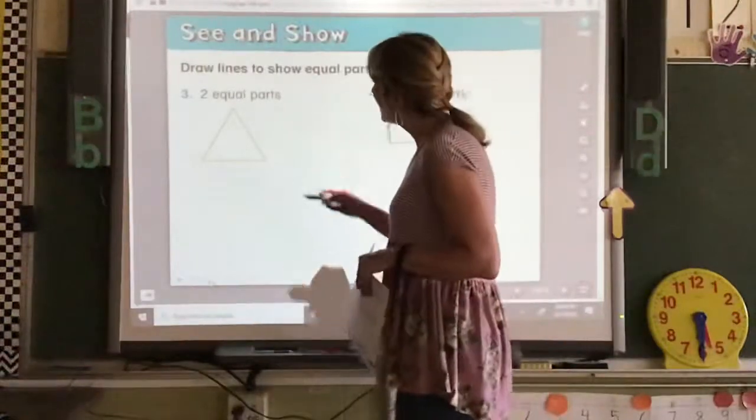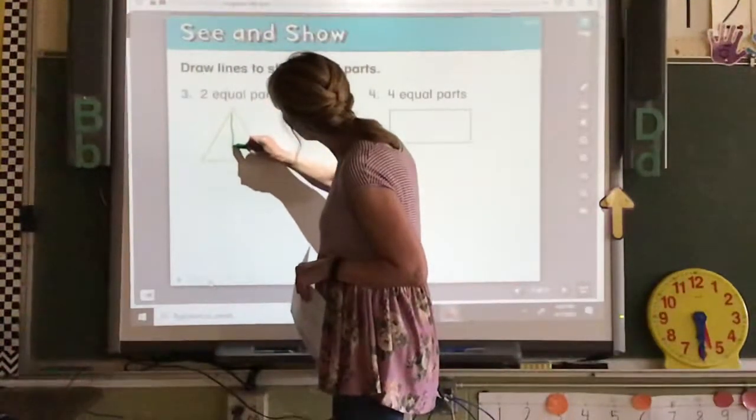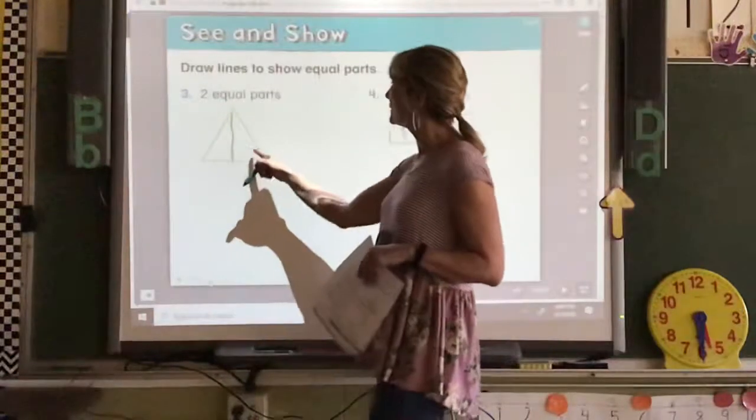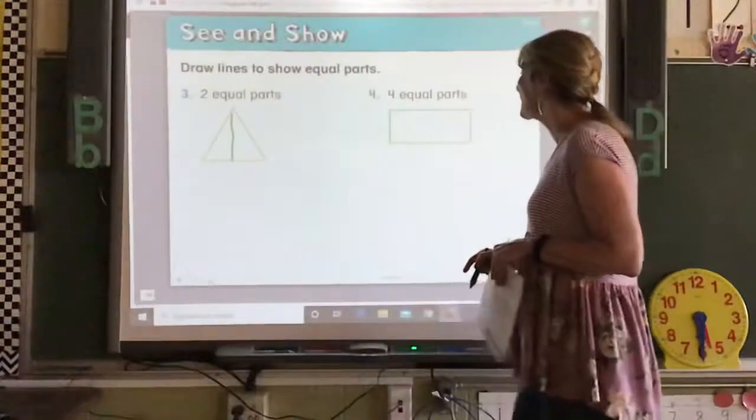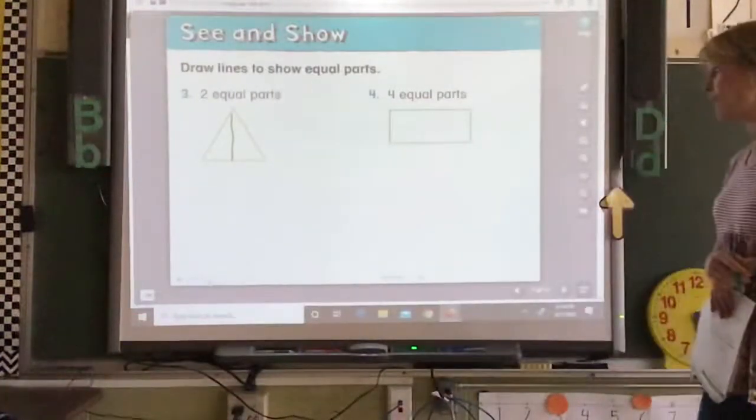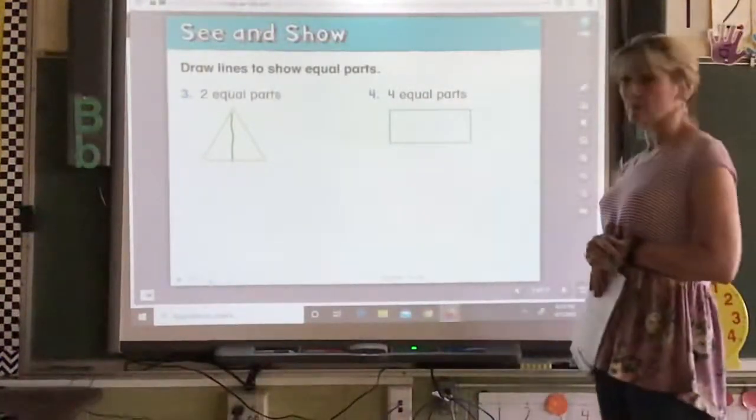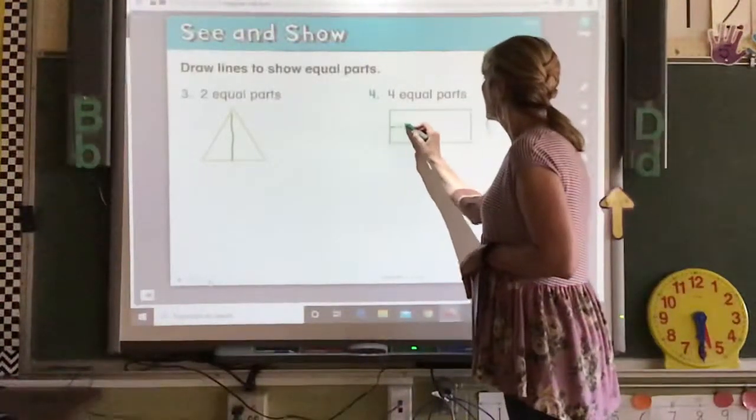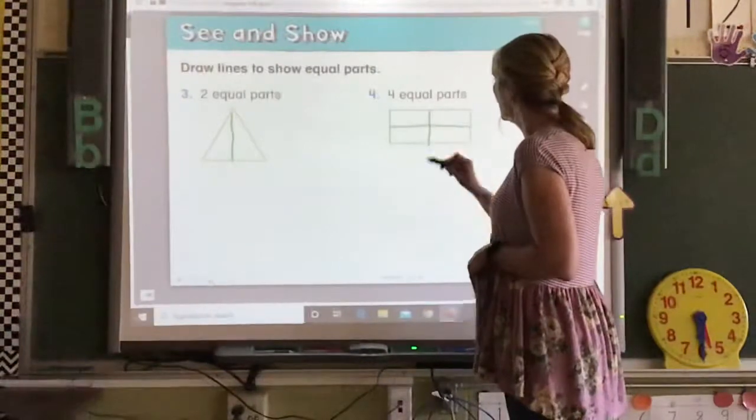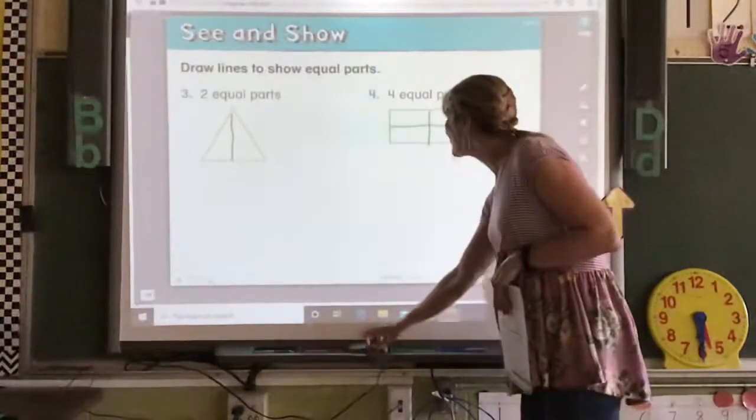So you've got to be careful how you draw your line. But if I draw my line here, hopefully, you know how smart for me. Those are more equal. So you've got one, two equal parts. On this one, they want four equal parts. There's a lot of ways you could do this one.